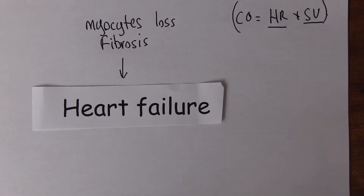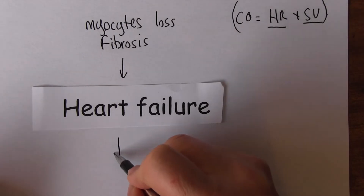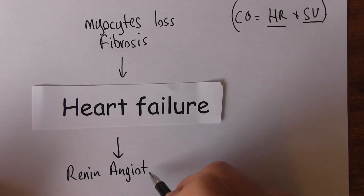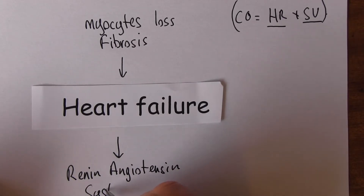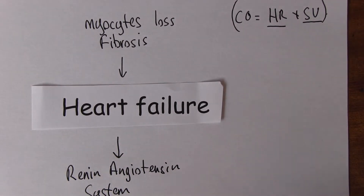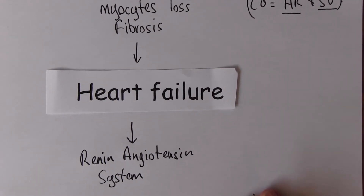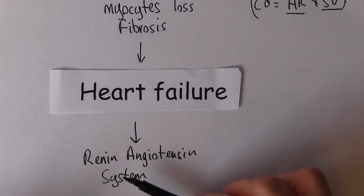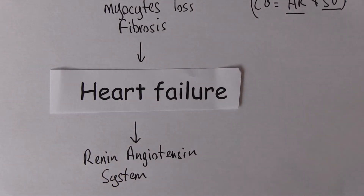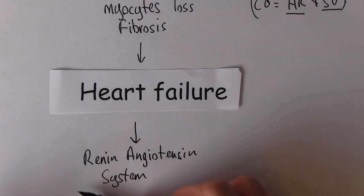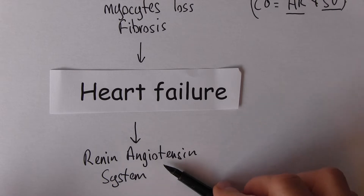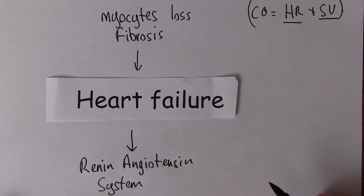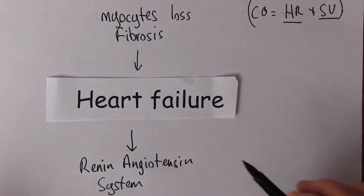If there's reduced cardiac output, normally that's going to stimulate the renin-angiotensin system. This is a compensatory mechanism. In a young, fit person, if cardiac output drops, the renin-angiotensin system will stimulate the heart to get things back to normal. But in heart failure, this system is trying to stimulate a heart with myocyte loss and fibrosis, so it's unable to stimulate it properly — the heart is already degraded and it's not going to work.